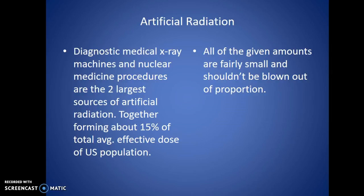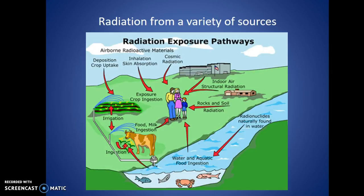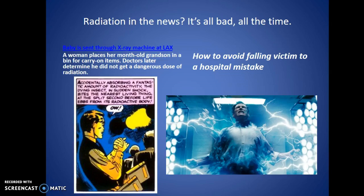The exposure pathways diagram shows where radiation comes from — rocks and soil, water, aquatic areas — everything deposits a little bit of radiation. It's hard to fully get away from it, so you have to appease patients' worries and fears about it as best you can.